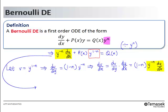Hence, I can rewrite the DE into the following form: 1 over 1 minus n dv/dx plus P(x) times v equals Q(x).